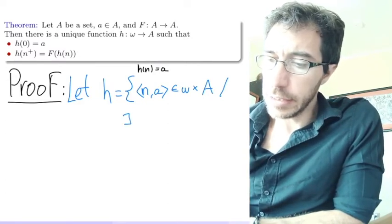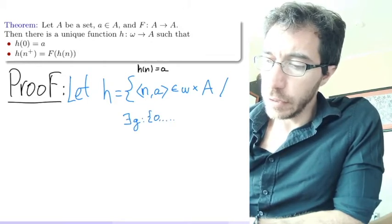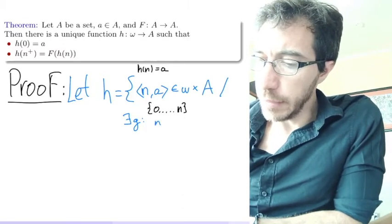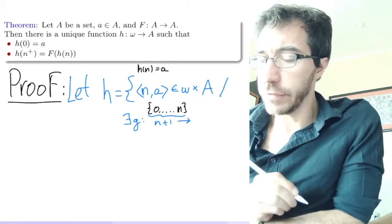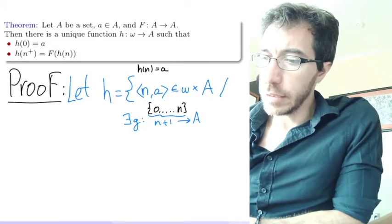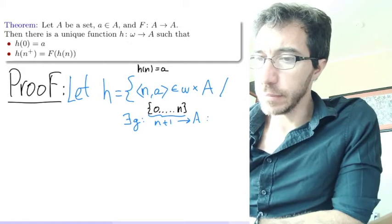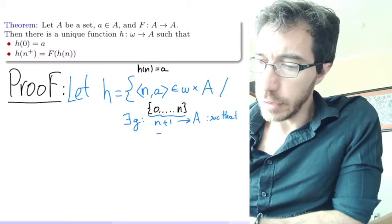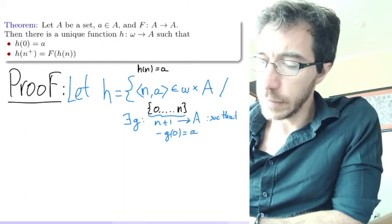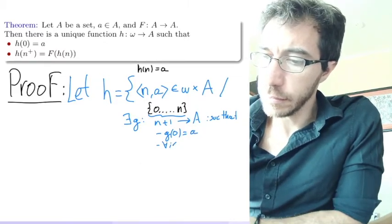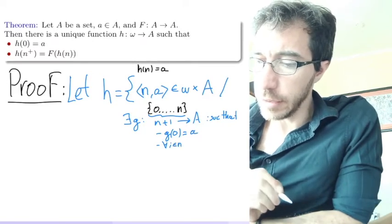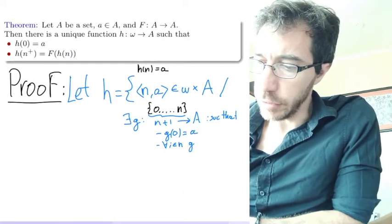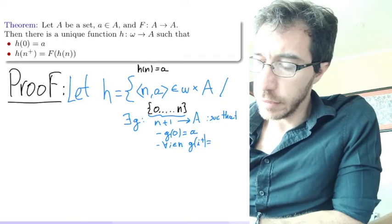Such as this. There exists a function g that goes from n plus 1, meaning that from 0 to n, to A, such that satisfies the following things. Such that satisfies two things: g of 0 equals little a,